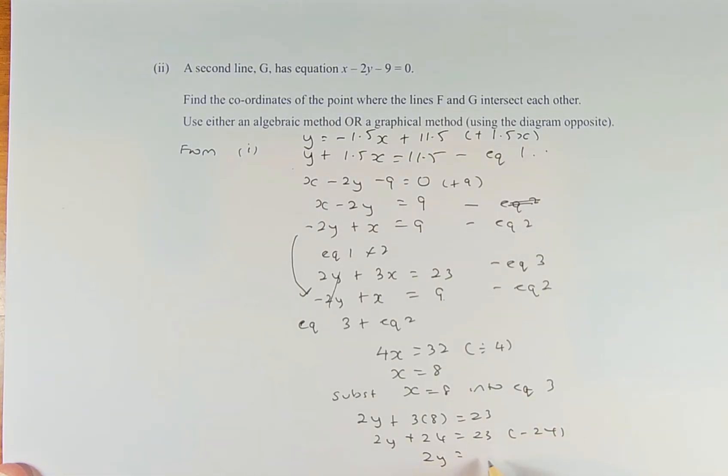2y = -1 because 23 minus 24 is -1. So y = -1/2 or -0.5.